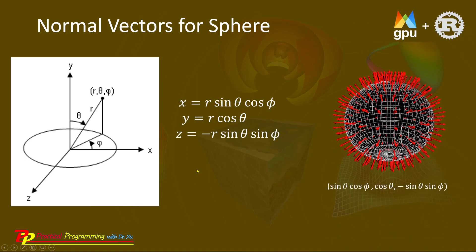The normal vector for a unit sphere is very simple. It is just given by the X, Y, Z coordinates on the sphere surface. That is, the normal vector is identical to its vertex positions on the sphere.